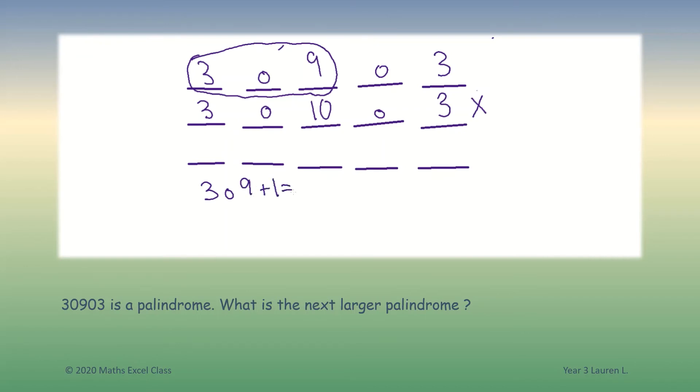...which equals 310. And then to create our five-digit palindromic number, the five-digit palindromic number will be 31013, and we will not need another zero because this is only a five-digit palindromic number.